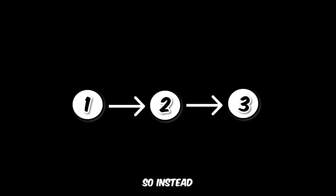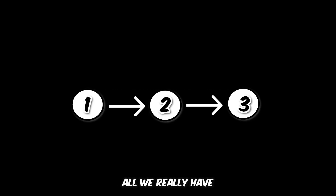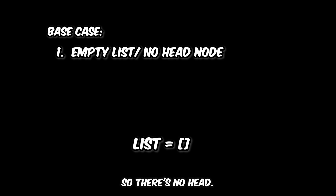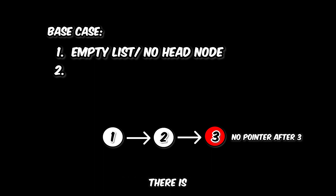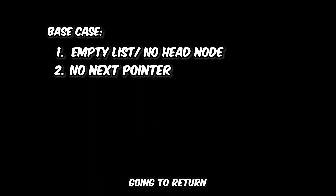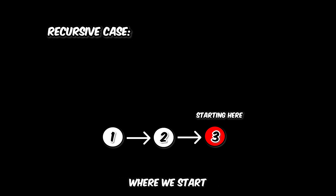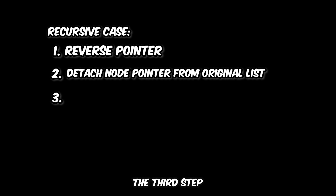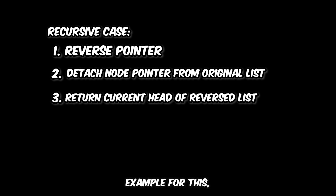Instead of worrying about the nodes themselves, let's actually worry about the pointers. Since if we implement this correctly, all we really have to do is just reverse the pointers, not the nodes themselves. When thinking recursively, we have to think of the base case and the recursive case. The base case is: one, if we weren't given a list so there's no head, or if we're on the last node in our list and there is no next pointer. If we hit our base case, we just return the head. For the recursive case, there are three steps: first, reverse the pointer; second, detach the reversed node from the original list; and third, return the new head, which is our reverse linked list.